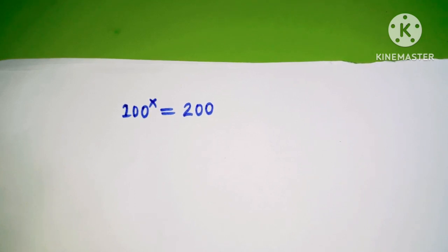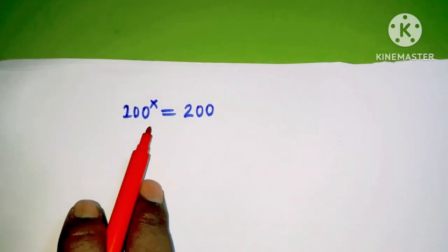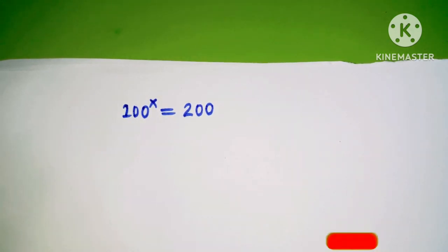Welcome back to LMPR learning. Today we have to find out the value for x for this equation: 100 power x equal to 200. Let's proceed to solve this question.